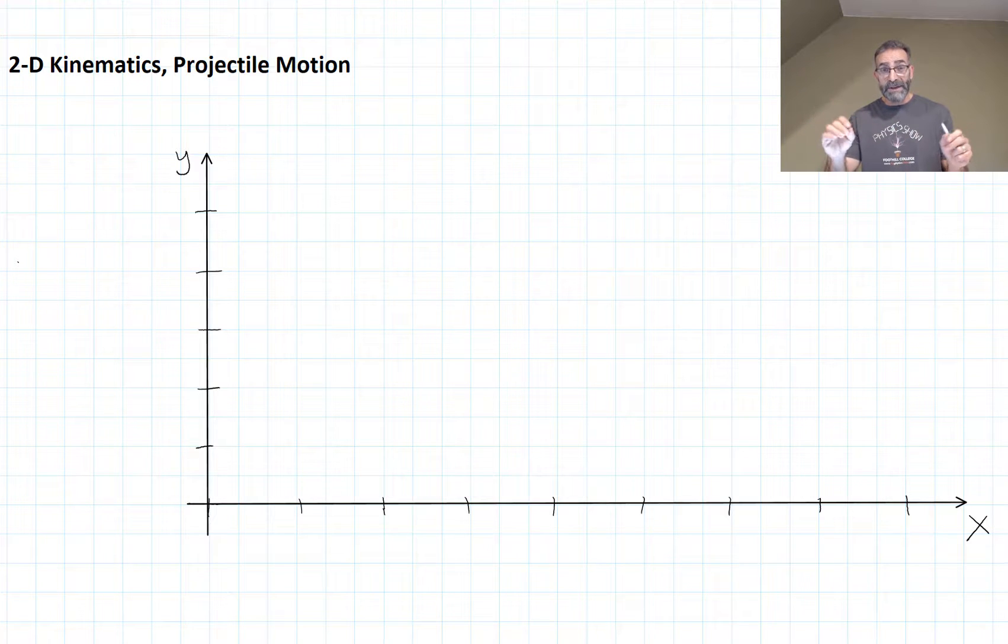And then the light flashes again and it's over here now and we put a dot there. And then it goes dark and the light flashes again and it's over here now. We put a dot there. Let's take a look at a two-dimensional motion diagram for an object being launched at an angle like this.